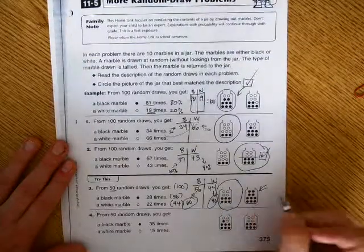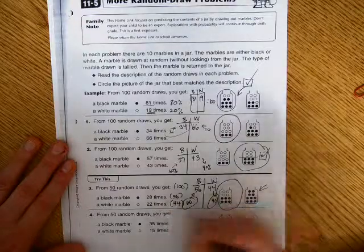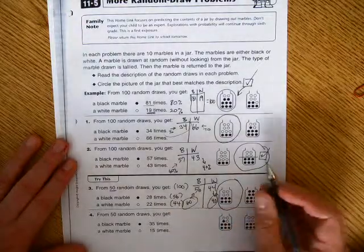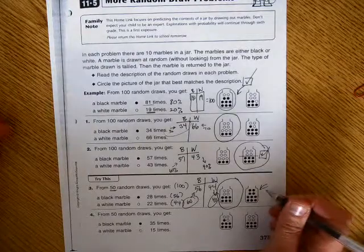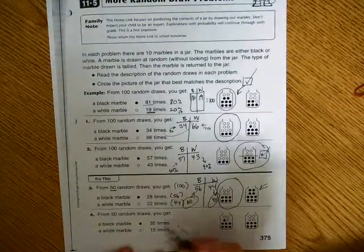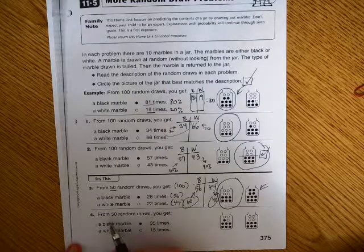In this one, black has 100% anyway, so you didn't really even need to go through all that if you just looked at the pictures first, because you would say, well, there's no white marbles in this one, so they couldn't have pulled that out. They wouldn't have pulled out any, it would have been zero.